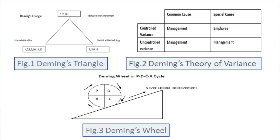Beyond the 14 points, Deming also gave three important philosophies. The first is Deming's Triangle, which has three apexes: management commitment, statistical methodology, and interrelationship. These three together complete the concept of total quality management.